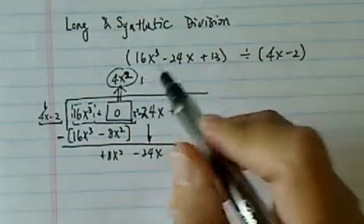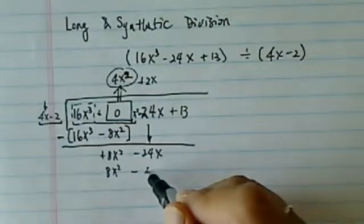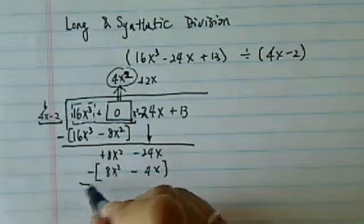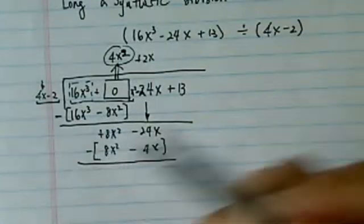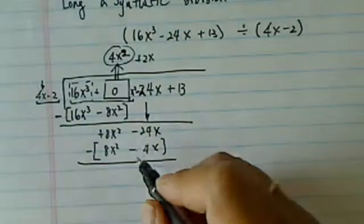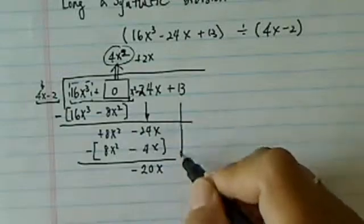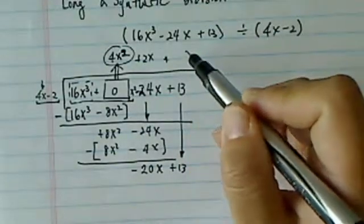Next term gets copied down, and then in order to match it I'm going to have a 2x over there, so I have 8x squared minus 4x over here. Again it's a minus, so 8x squared minus 8x squared goes away. Minus 24 minus minus becomes plus.